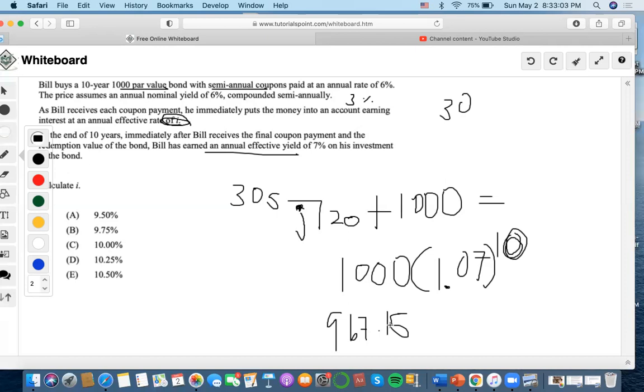We end up getting 4.76% as the semi-annual rate on the reinvestment account, but now we're going to have to convert this as an annual thing.